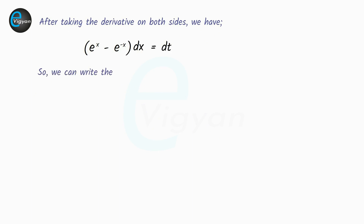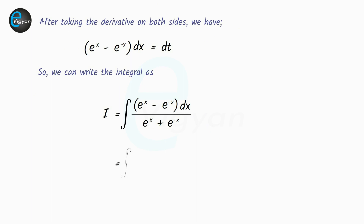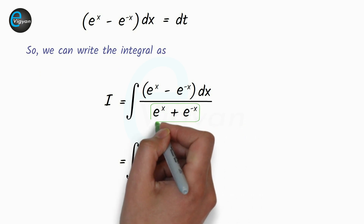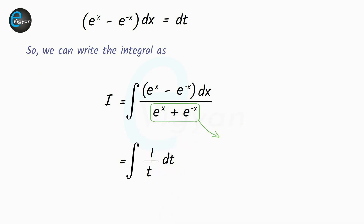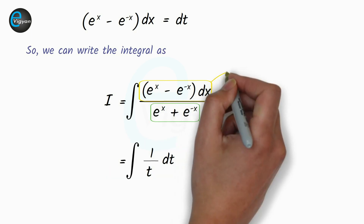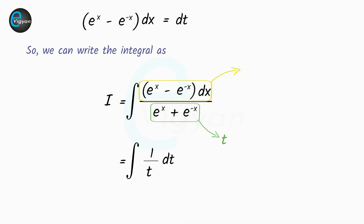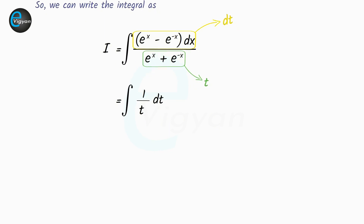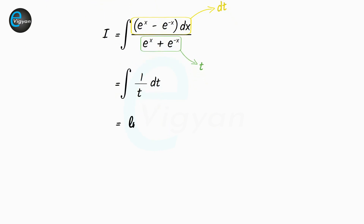So we can write the integral as i equal to integration of 1 upon t dt, because we have e raised to the power x plus e raised to the power minus x equal to t and e raised to the power x minus e raised to the power minus x dx equal to dt. So now the integral becomes i equal to ln of mod t plus c.